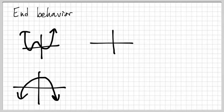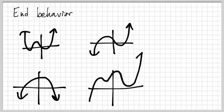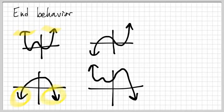Here's another one — we're going to do some more squiggly graphs. End behavior: what the heck is it? The end behavior is the arrows — it's where the arrows are pointing on the left and the right-hand side of the graph.